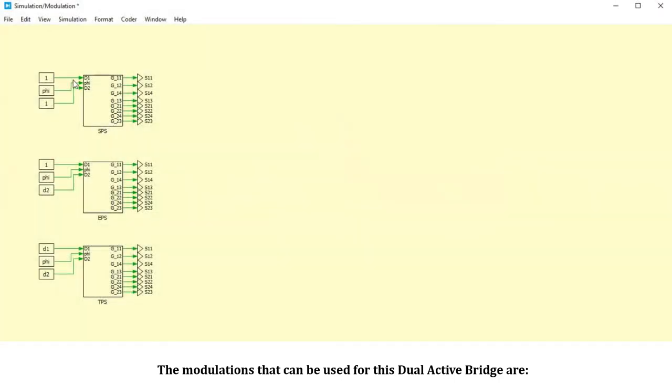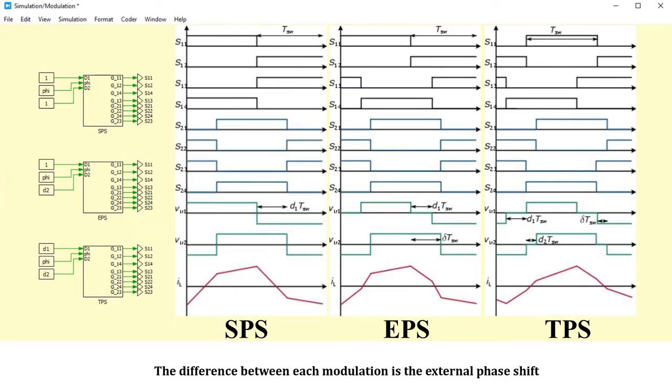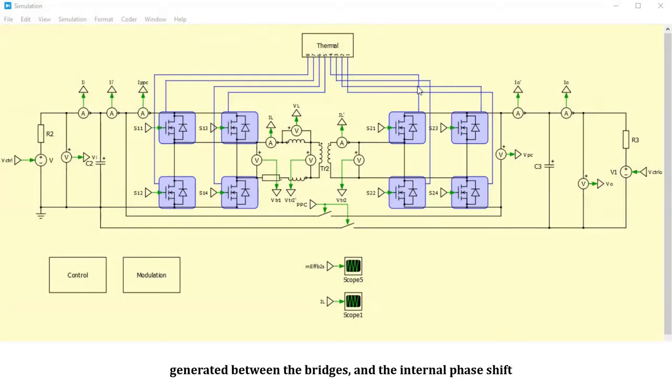The modulations that can be used for this dual active bridge are single, extended, and triple phase shift. The difference between each modulation is the external phase shift generated between the bridges and the internal phase shift that can be produced in just one bridge. It's important to choose the correct one to minimize the transformer RMS current and decrease conduction losses in the windings and switches.